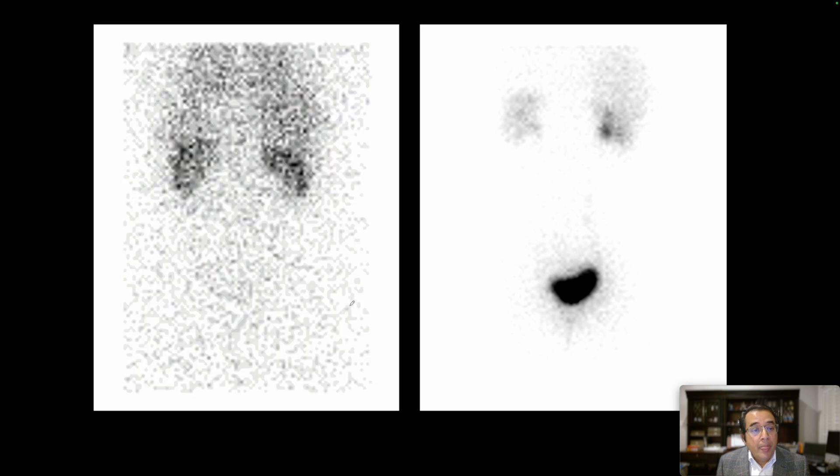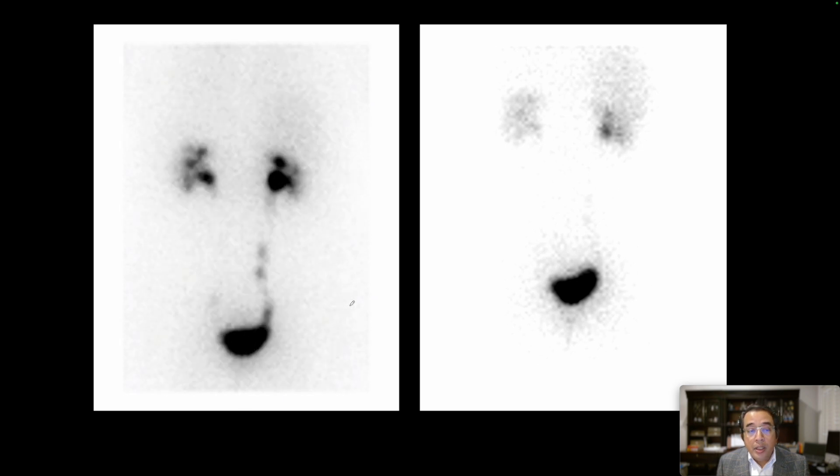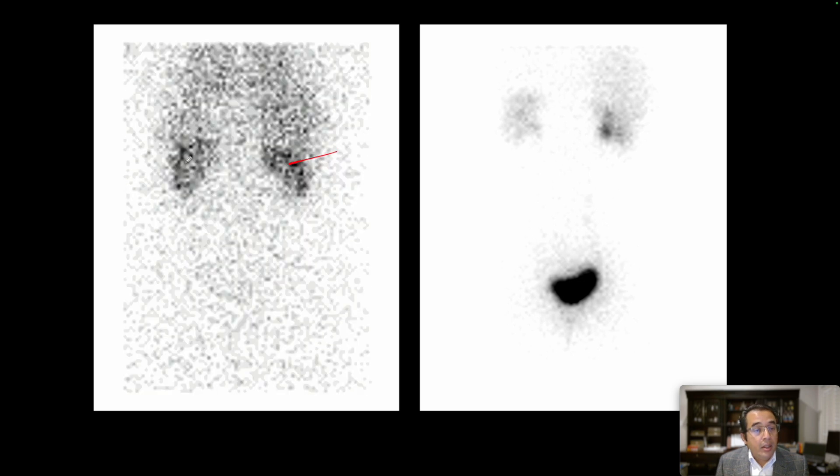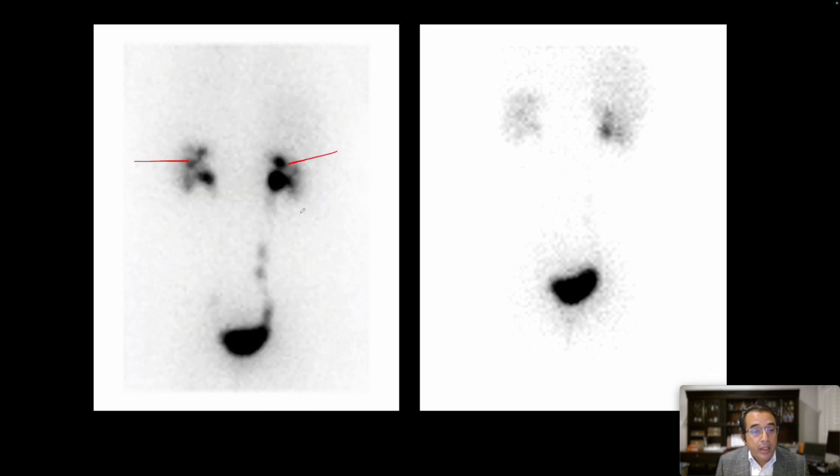When we see something which looks like stasis of urine, then we inject these patients with Lasix and acquire more images and evaluate them for obstruction. So this is the dynamic image showing initially the blood flow into the kidneys, seen right there in the left and the right kidneys.